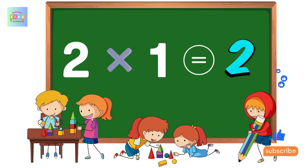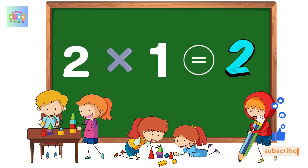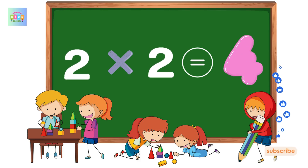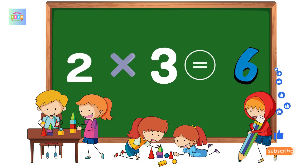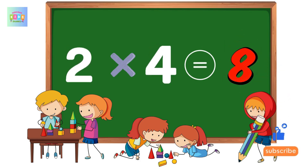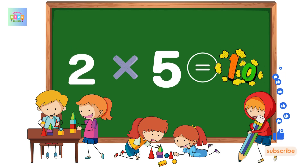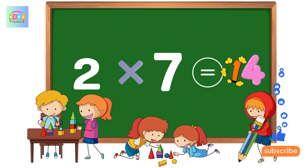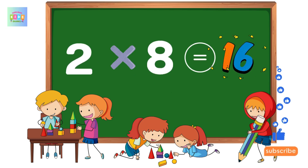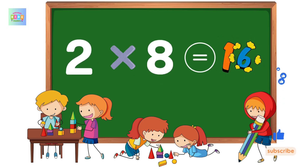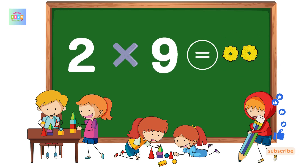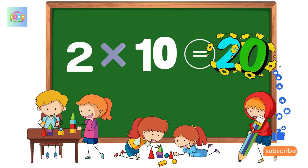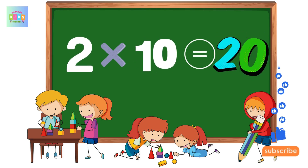Table of 2. 2 1s are 2, 2 2s are 4, 2 3s are 6, 2 4s are 8, 2 5s are 10, 2 6s are 12, 2 7s are 14, 2 8s are 16, 2 9s are 18, 2 10s are 20.